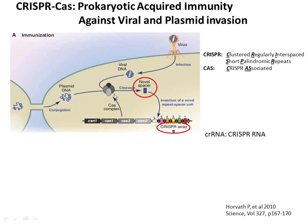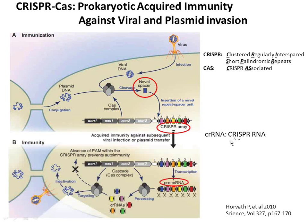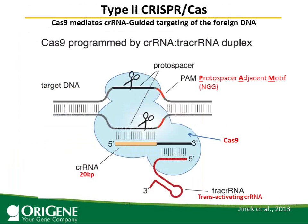Upon foreign DNA invasion, the Cas complex will chop it up into small fragments called spacers, which are then integrated into the CRISPR locus. The foreign DNA fragments can then be transcribed into crRNA — first as a precursor, and then the pre-crRNA is further processed into individual crRNAs, which then complex with Cas to target the corresponding foreign DNA.